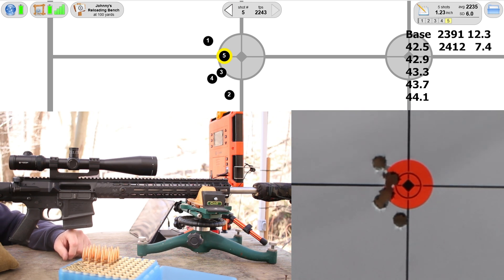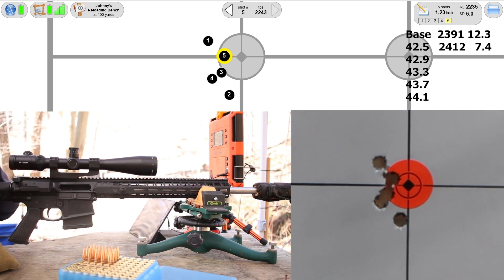That velocity ended up being 2412, standard deviation 7.4, and the group was 1.23 inches with all of this vertical stringing. The velocity is going to be pretty darn close to Varget. So we shot 42.0 grains of Varget and that was 2391. Now we're 42.5 grains of Reloader 15.5 and we're up to 2412. That's awfully close. Back to our powder granule size - it looks pretty close to Varget. I consider this a good thing, Varget's a good powder.